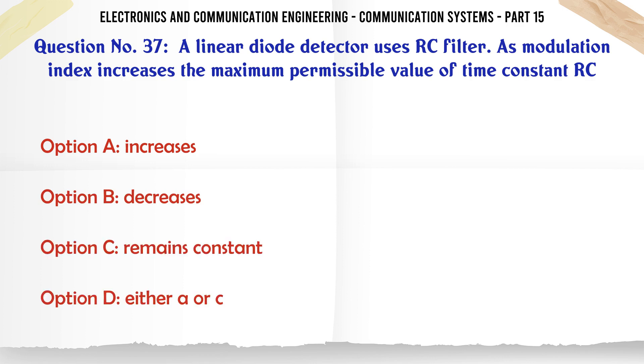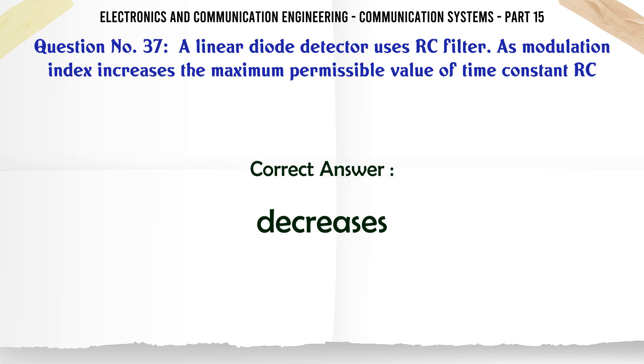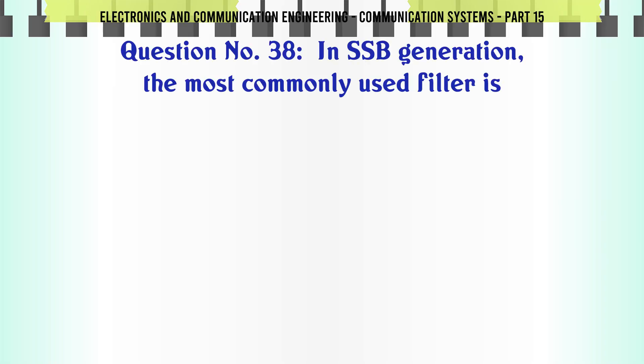A linear diode detector uses RC filter. As modulation index increases the maximum permissible value of time constant RC: A increases, B decreases, C remains constant, D either A or C. The correct answer is decreases.